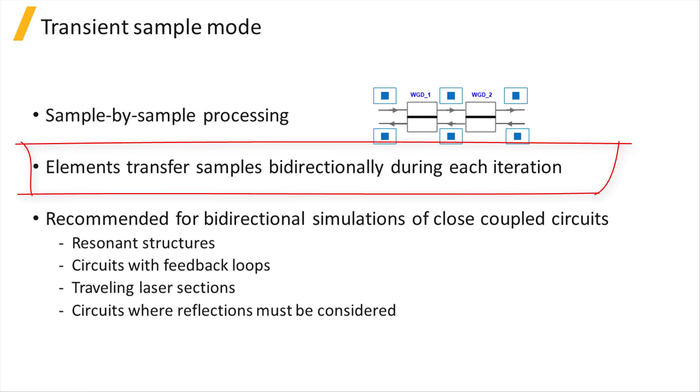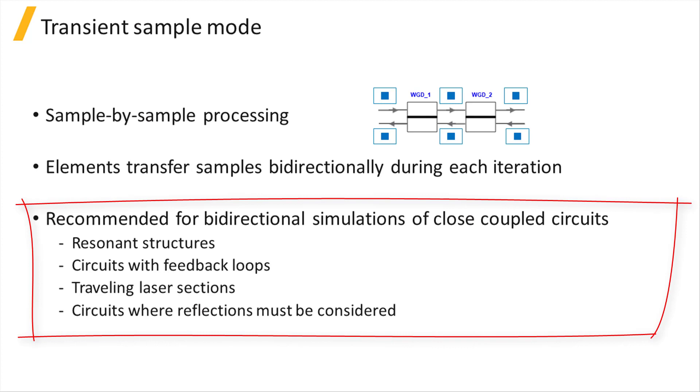Elements in the circuit transfer samples bi-directionally during each iteration to simulate interactions and resonances between multiple elements. The transient sample mode is recommended for bi-directional simulations of close-coupled circuits such as resonant structures, circuits with feedback loops, traveling laser sections, or photonic circuits where reflections must be considered.